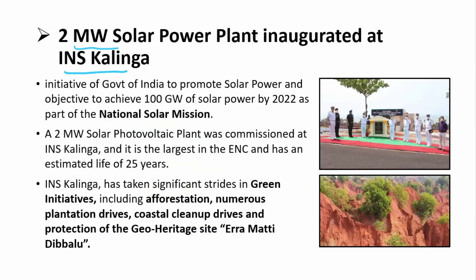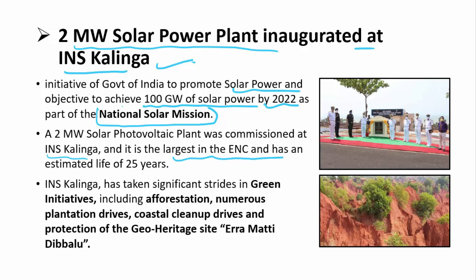The next news is from INS Kalinga: a two-megawatt solar power plant was inaugurated there. This initiative is part of the Government of India's goal to achieve 100 gigawatts of solar power by 2022 under the National Solar Mission. The two-megawatt solar photovoltaic plant commissioned at INS Kalinga is the largest in the Eastern Naval Command and has an estimated life of 25 years. INS Kalinga has also undertaken green initiatives including plantation drives, coastal cleanup drives, and protection of geo-heritage sites such as Yeramatti Dibalu — red sandstones.